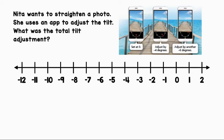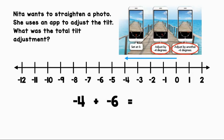First, the phone was set at 0. Then it was adjusted by negative 4 degrees. We can represent that with negative 4. Next, it was adjusted by another negative 6 degrees. We can add negative 6, and that will give us our total adjustment. Let's move 6 spaces to the left of negative 4, and we will end up at negative 10.